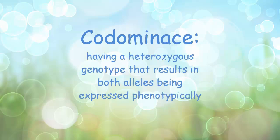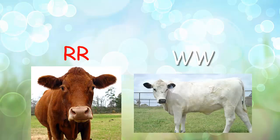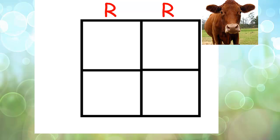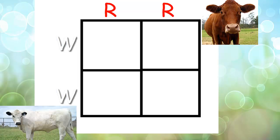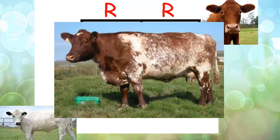First we are going to look at co-dominance. Co-dominance is defined as having a heterozygous genotype that results in both alleles being expressed phenotypically. For an example, let's look at some cows. In cows, the red color of their fur is dominant, and the white color of the fur is also dominant. So if we did a cross between these two, let's pull up a Punnett square. We put the two dominant alleles for red on top and the two dominant alleles for white on the side. And cross them, we are going to have four offspring that are going to be capital R, capital W.